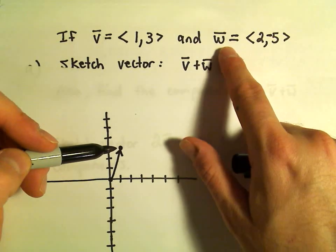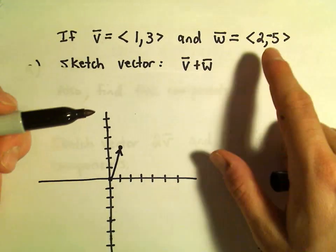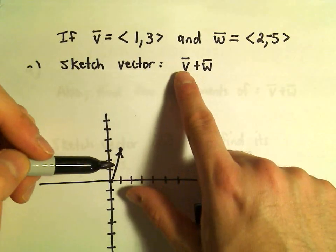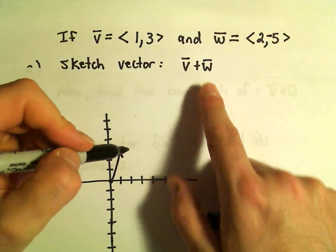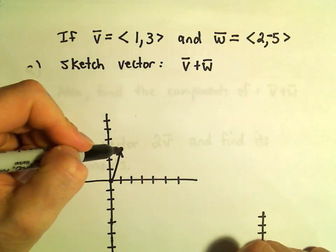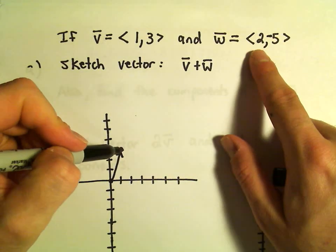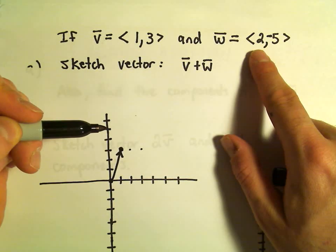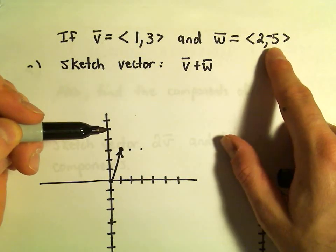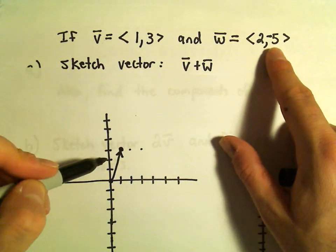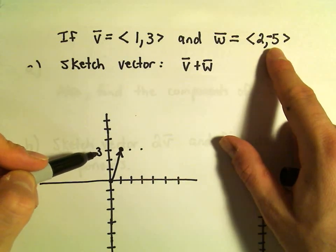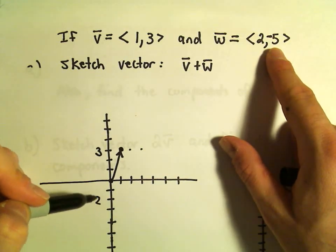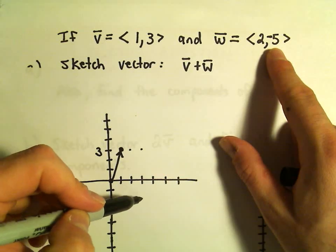Now vector w, when we sketch vectors, wherever the first one stops, I just stick the new one onto that. So vector w is going to start right here. But it says basically you move 2 units to the right, and then we go 5 units down. So I think we're already up here, you can think about this as being a y value of 3.